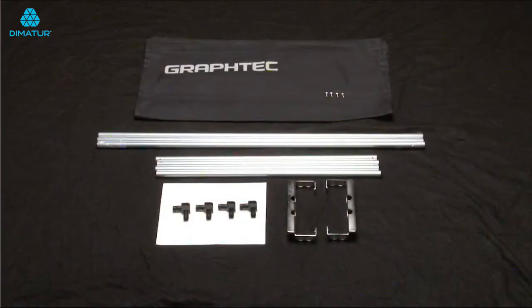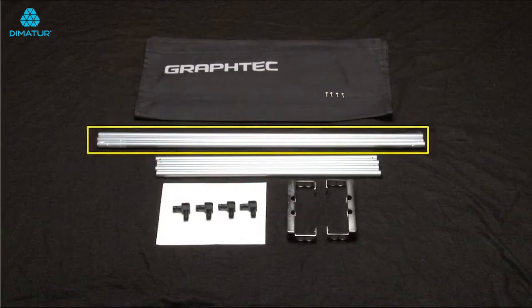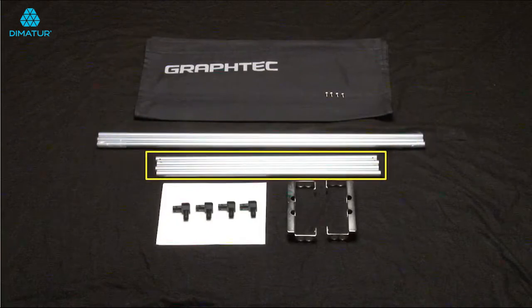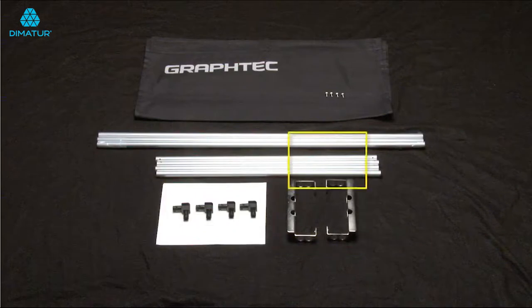In the basket assembly, there should be the basket made of fabric, three long basket tubes, four short basket tubes, four corner joints, two mounting brackets, four M5 socket cap head screws.